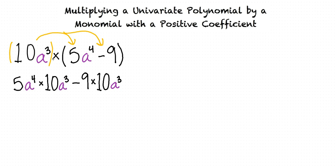like this. Notice 5a to the 4th times 10a cubed minus 9 times 10a cubed. Now that we've eliminated the parentheses in our expression, the final step is to simplify.